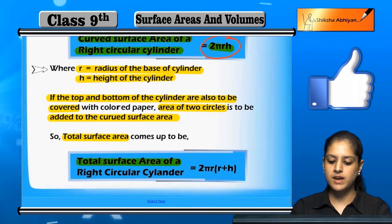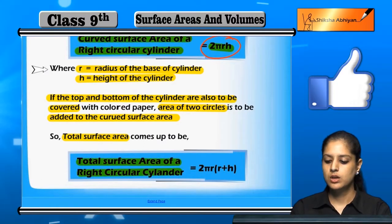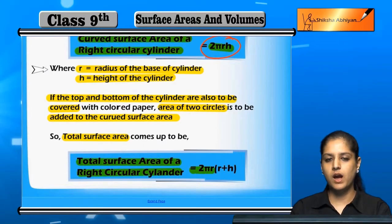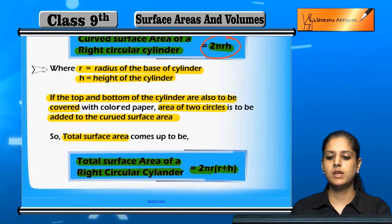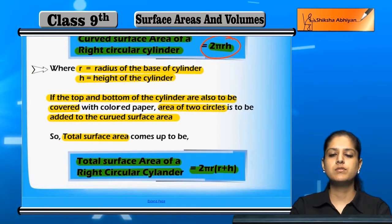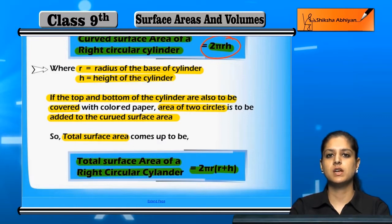So, what is the total surface area of the right circular cylinder? It is 2πR multiplied by (R + H). This formula combines the curved surface area with the areas of the two circular bases.